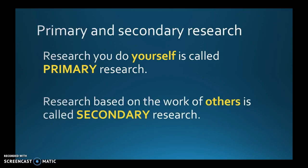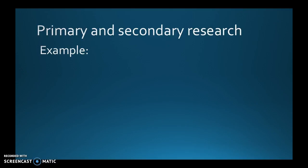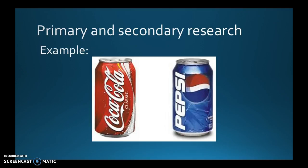Research based on the work of others is called secondary research. If someone's already written a paper on how strict laws in certain countries have affected violence issues, you could reference their work. Here's an example: if you're trying to figure out which is more preferred, Coke or Pepsi, and you pulled a hundred people and did a blind taste test and recorded the results, that would be primary research. If you find on the internet where someone's already done this test and you're just citing their findings, that would be secondary research.